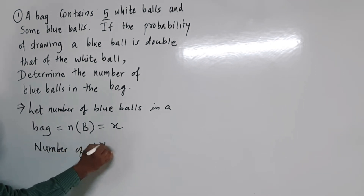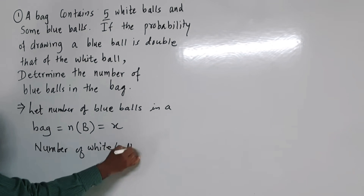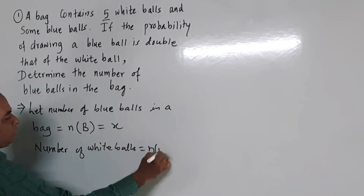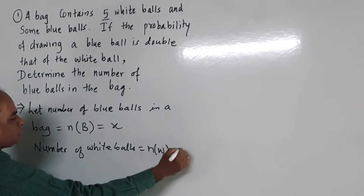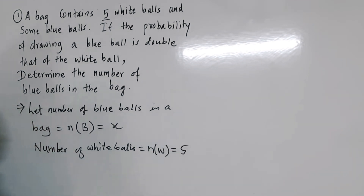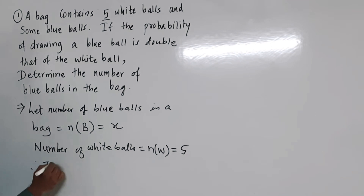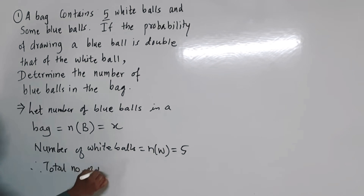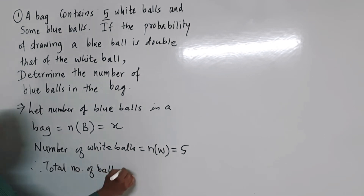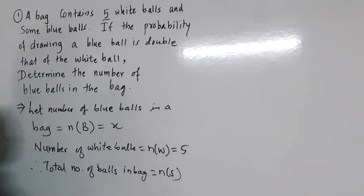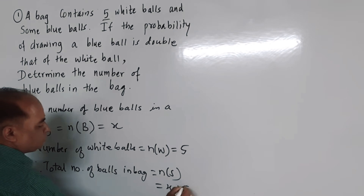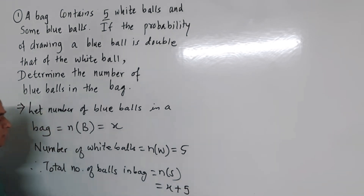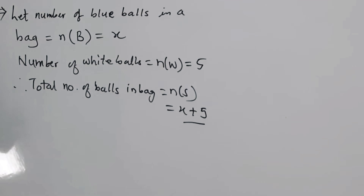The number of white balls is given. This bag contains 5 white balls, so the number of white balls w is equal to 5. Therefore, the total number of balls in the bag, that is the sample space, Ns is equal to x plus 5.